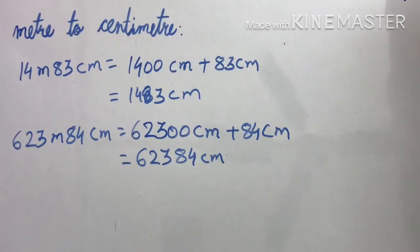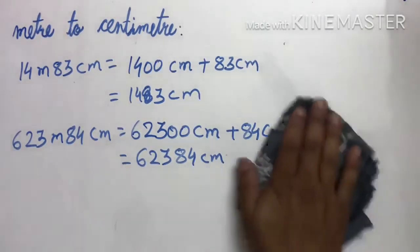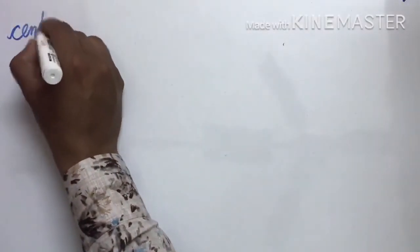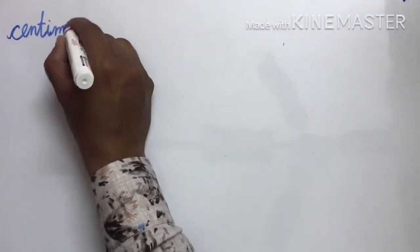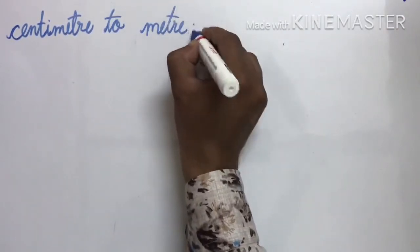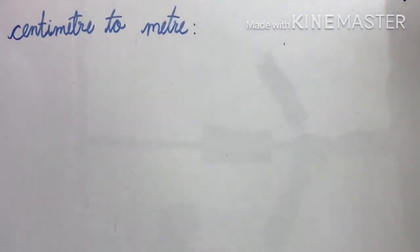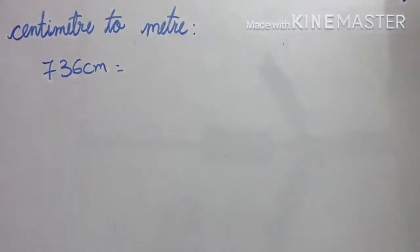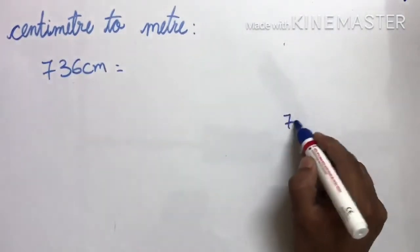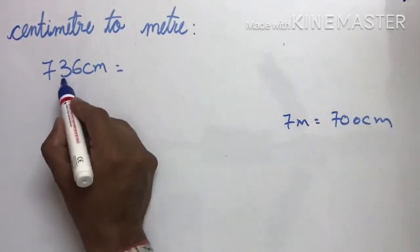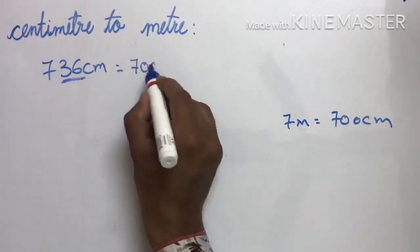I hope meter to centimeter वाला clear है। Now we will learn centimeter से meter में कैसे change करना है। Centimeter to meter change करना है। ऐसे दिया हो 736 cm — तो सोचो हम क्या करते थे? 7 meter हो उसको हम 700 cm करते थे। Simply ये दो number को 00 कर दो — ये हो गया 700 cm.